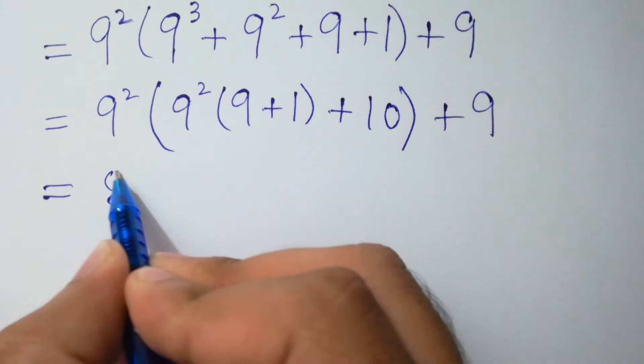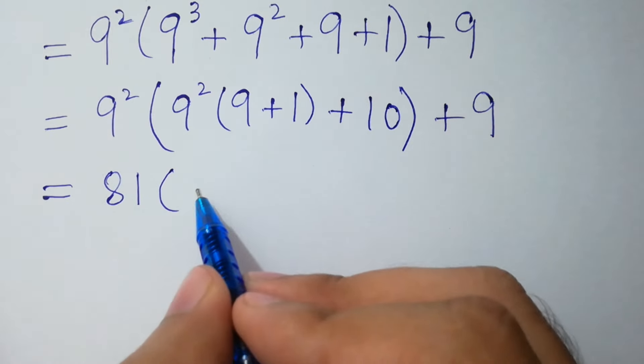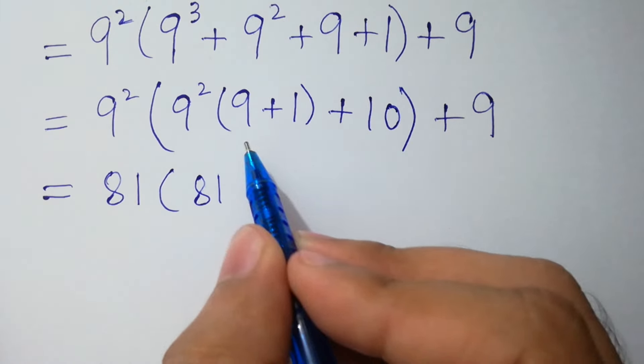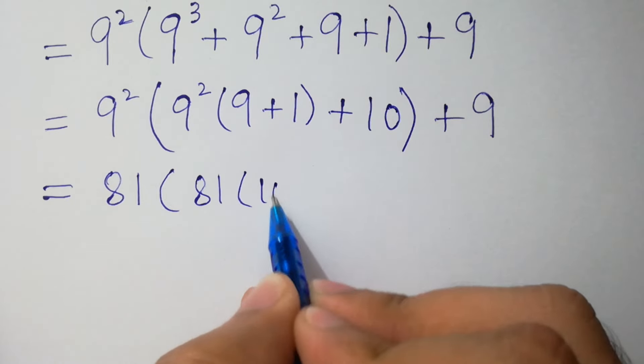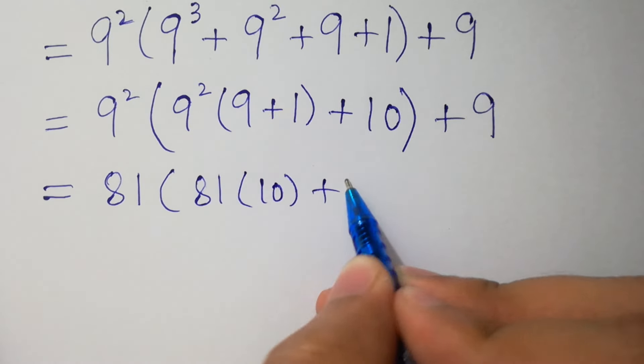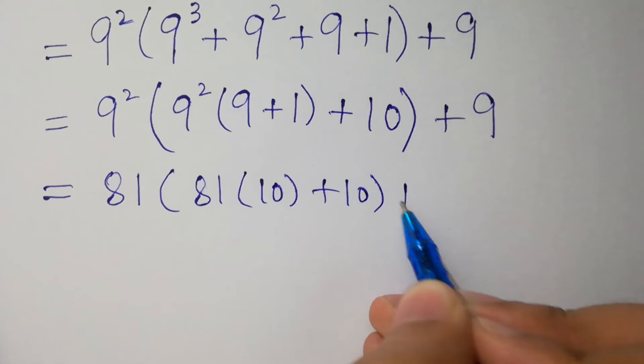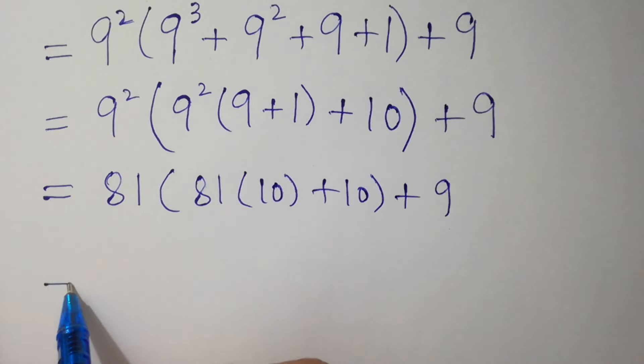Next step: 9 square equals 81, and the next part becomes 81 times 9 plus 1 is 10, plus 10, close bracket, plus 9.